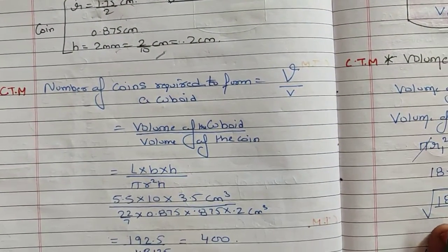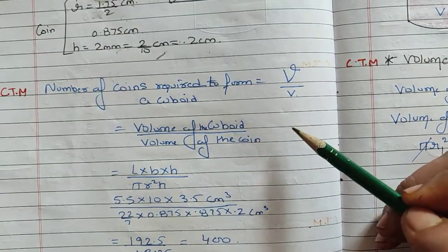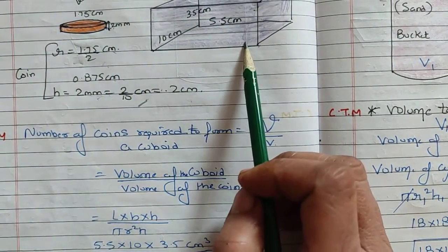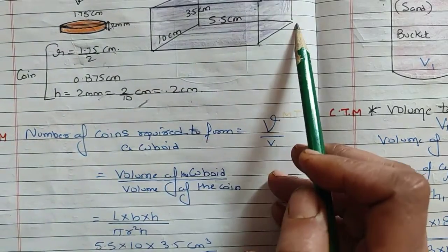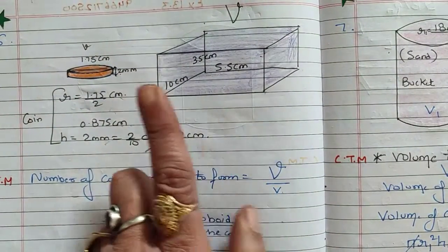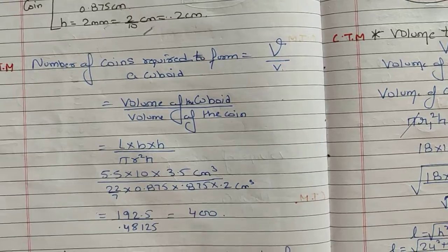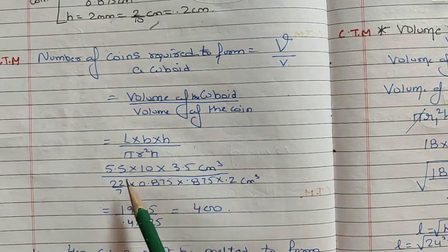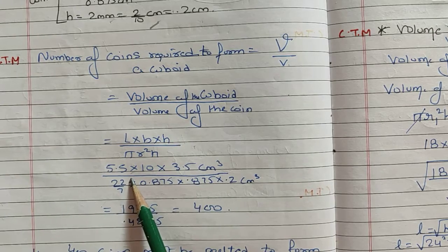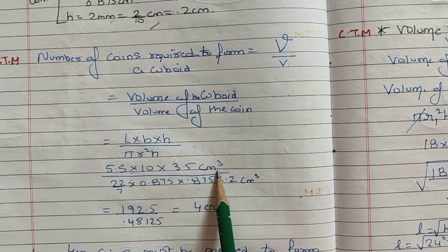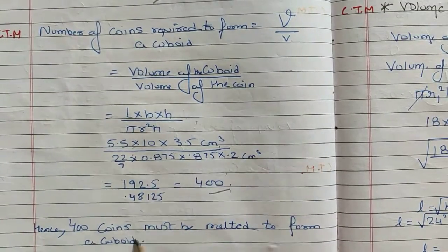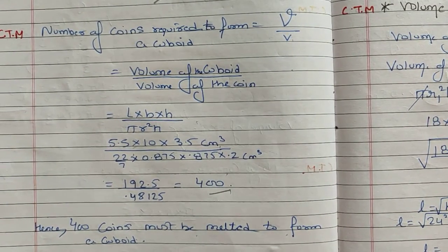We apply the number-of-things concept: divide the big volume by the small volume. The big volume is the cuboid, because we need to make the cuboid. Volume of cuboid is length × breadth × height; volume of cylinder (coin) is πr²h. Putting in the values of pi and the given dimensions, the answer will be 400 coins that must be melted to form the cuboid.